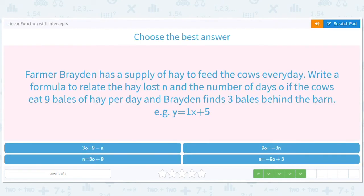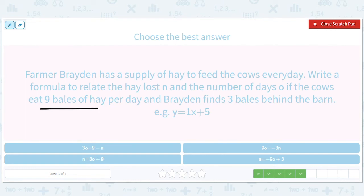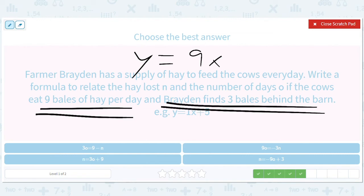Farmer Braden has a supply of hay to feed the cows every day. Write a formula to relate the hay lost N and the number of days O. If the cows eat nine bales of hay per day slope, Y equals 9X. And he finds three. But it's lost, right? So the cows are eating, so it's negative 9X. But he finds three to start with. So negative letter equals negative 9 letter plus three. So that would be this.